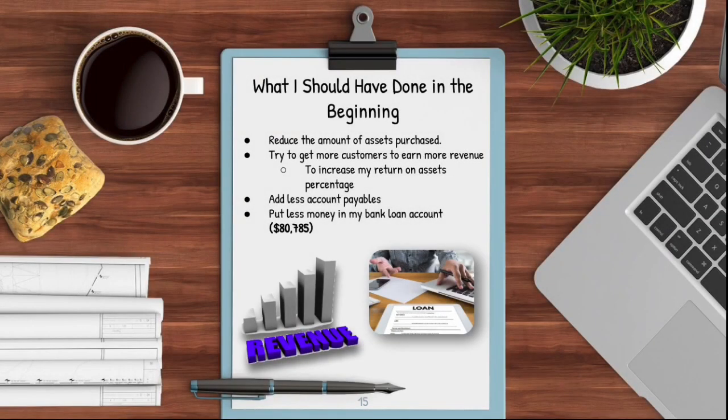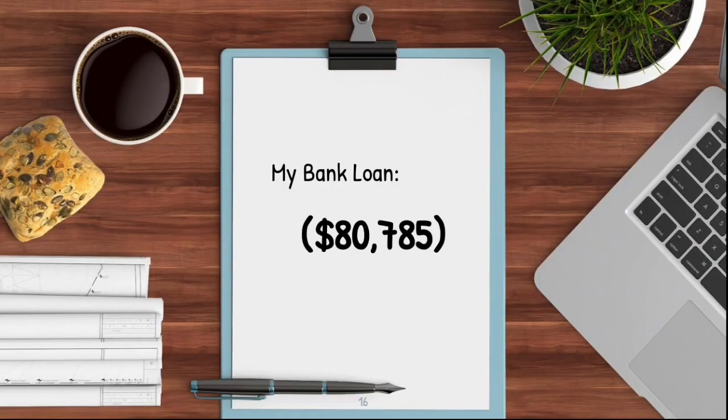After doing a ratio analysis of my business, I realized a few things that I should have done when my business first started. I should have reduced the amount of assets purchased, and I should have tried to get more customers so that there are more sales transactions to generate more revenue. This would have increased my return on assets percentage. Additionally, I should have put less in account payables and less money in the bank loan. This is the reason why my debt ratio is so high compared to my equity ratio — I owe the bank $80,785. So if I ever start a business in the future, I need to keep in mind not to have too many liabilities.